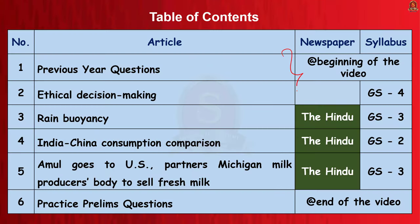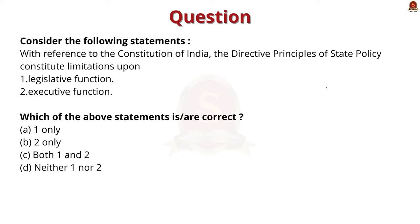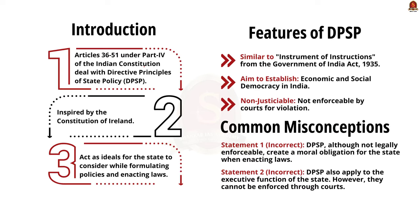Let us get into the previous question discussion. The first question: with reference to the Constitution of India, do DPSPs constitute limitations upon, firstly, legislative functions, and secondly, executive functions? You have to find which of the above statements is correct. To answer this question, you should know about DPSP — Articles 36 to 51 under Part 4 of the Indian Constitution dealing with Directive Principles of State Policy.